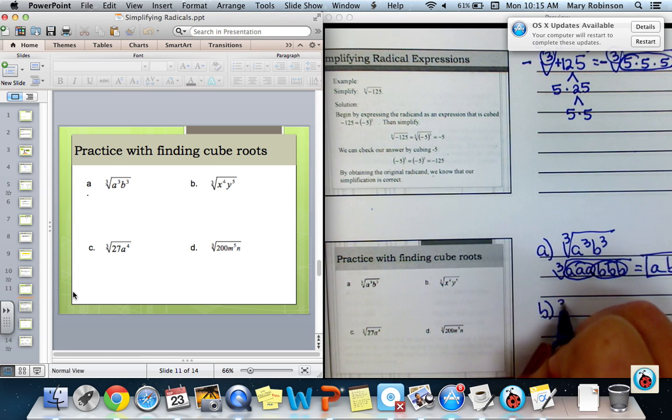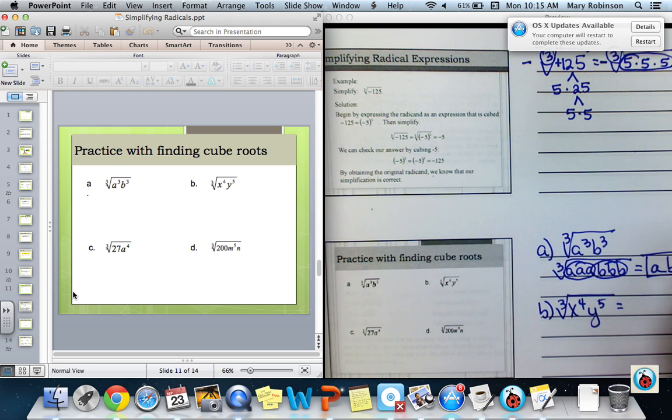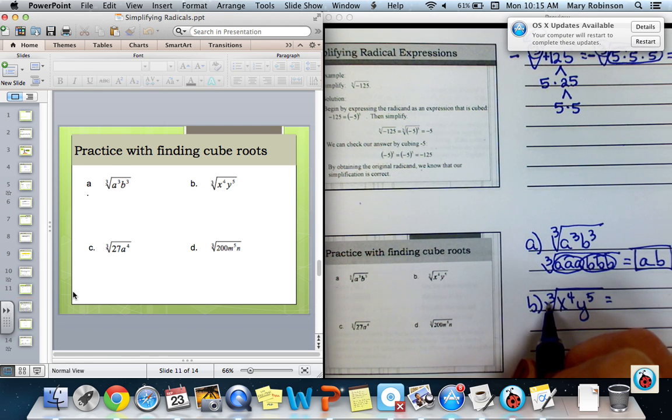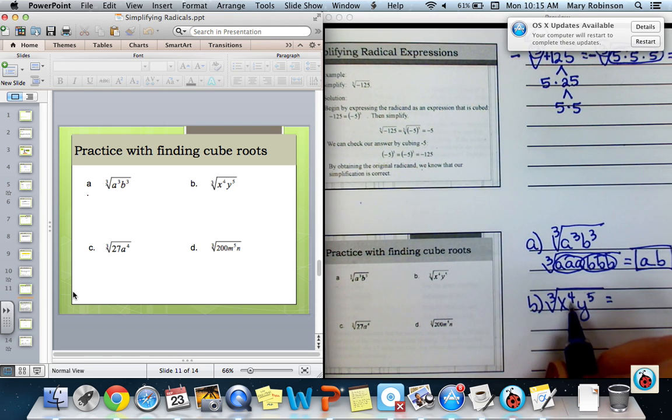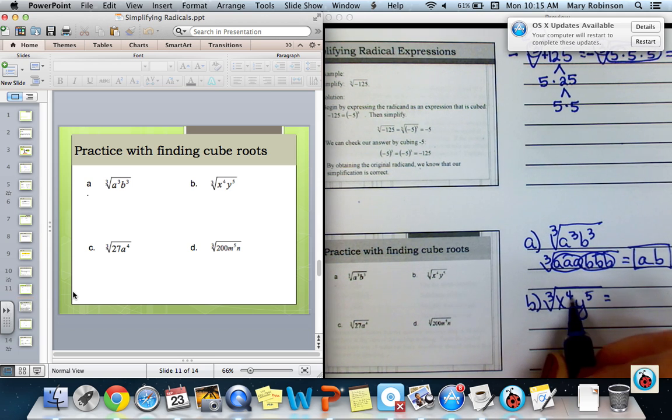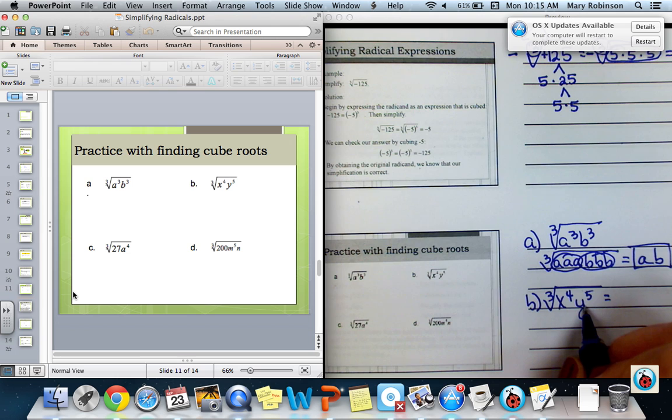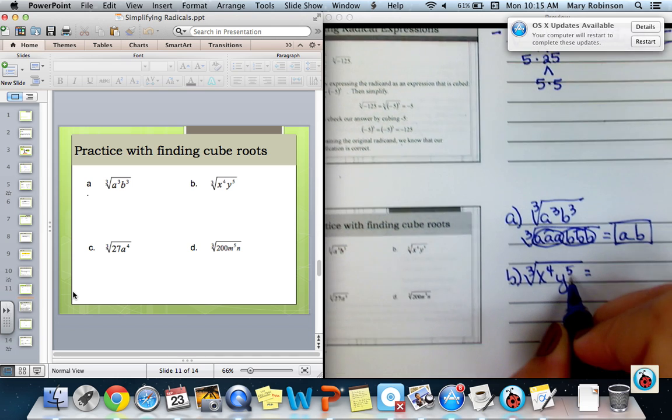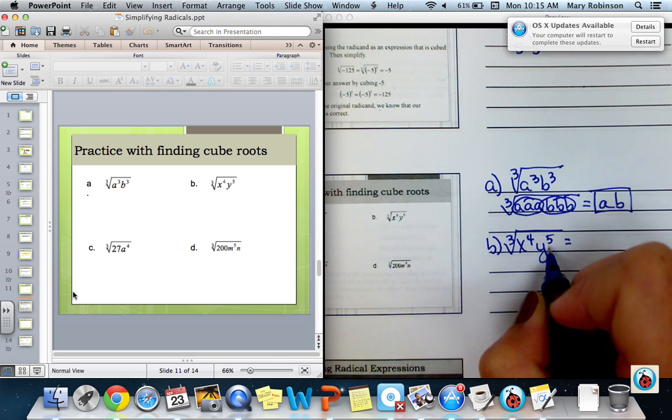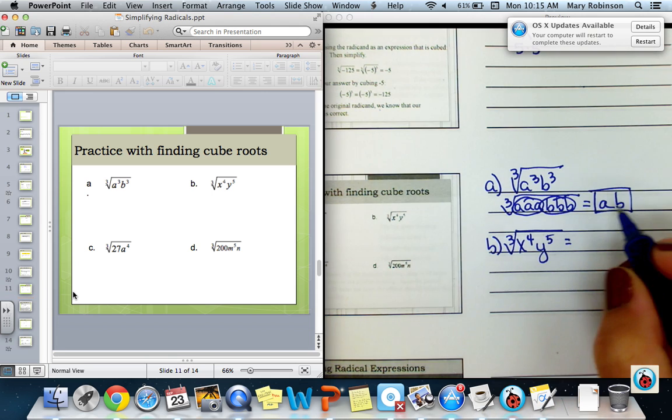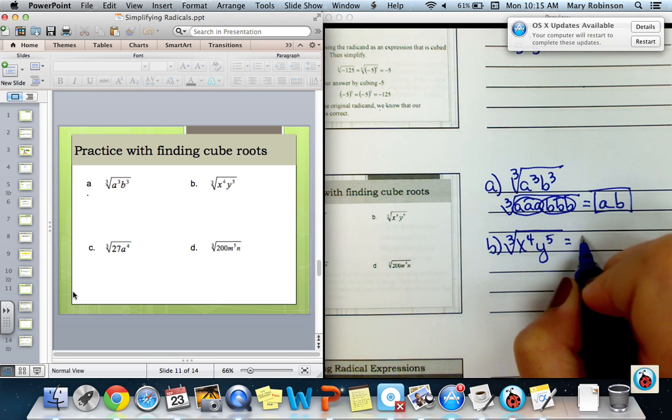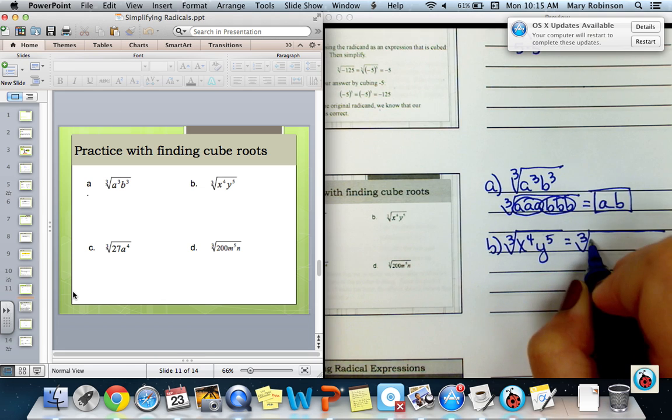For B, I have the cube root of X to the 4th, Y to the 5th. So really what you want to think is, by looking at it, there are going to be 3 X's, meaning I can pull out one of the X's, but one will be left inside. For the Y's, since I have 5, I'm going to write 5 of them, I will have one group of Y's, leaving 2 on the inside. So hopefully you'll get to the point where you can see that and save yourself some time.